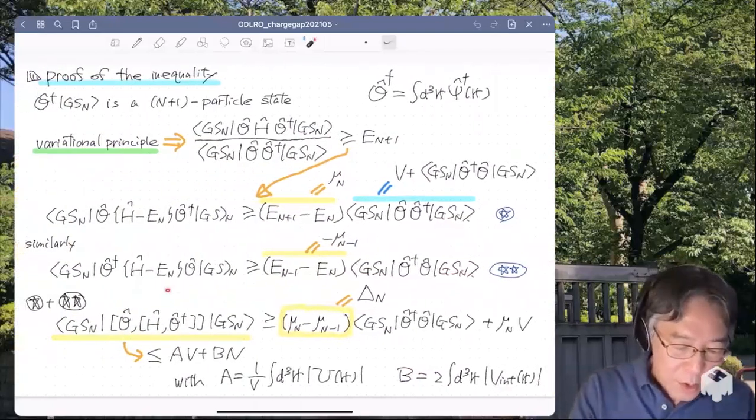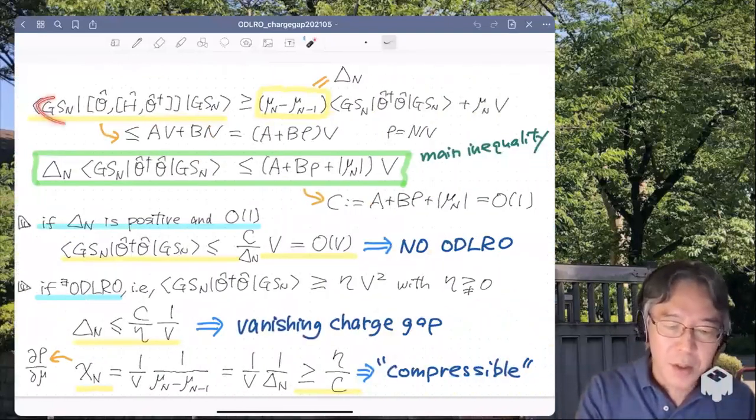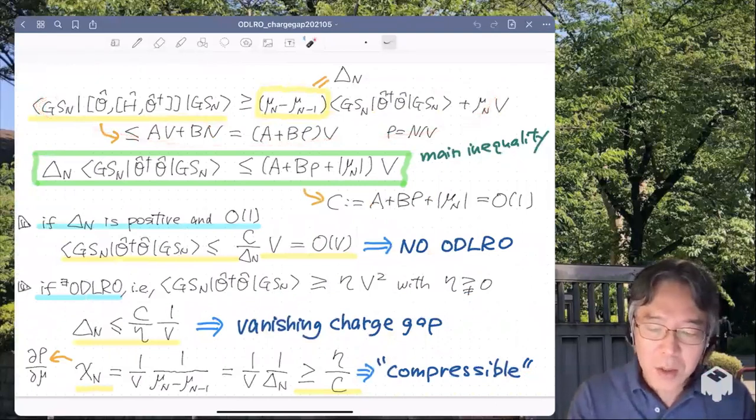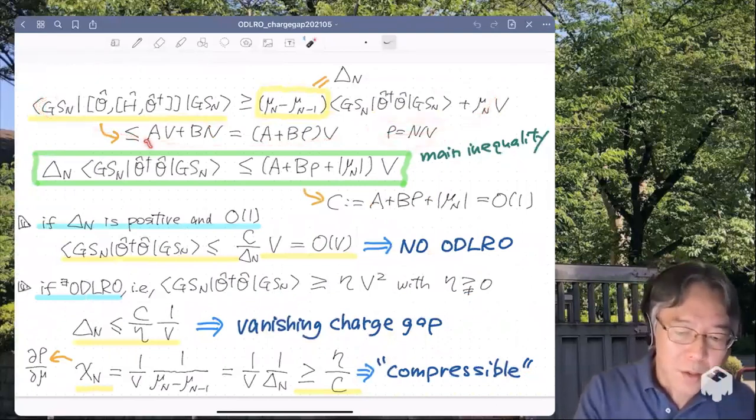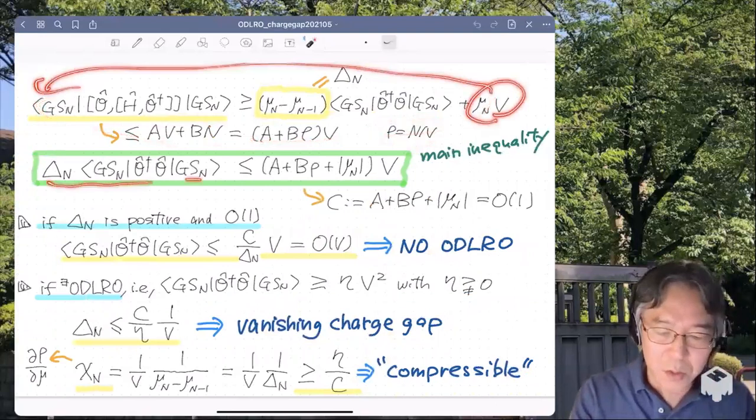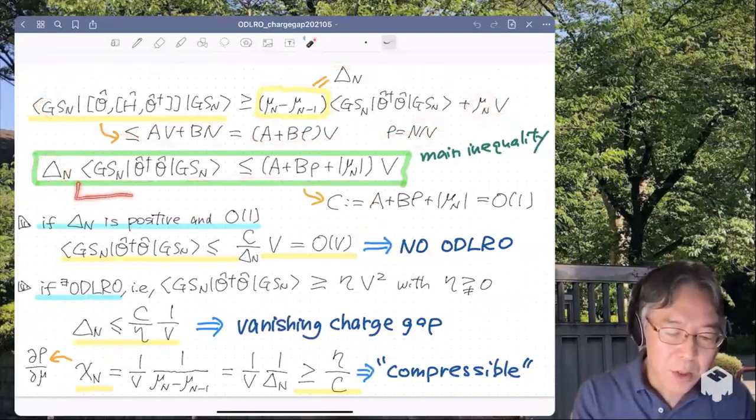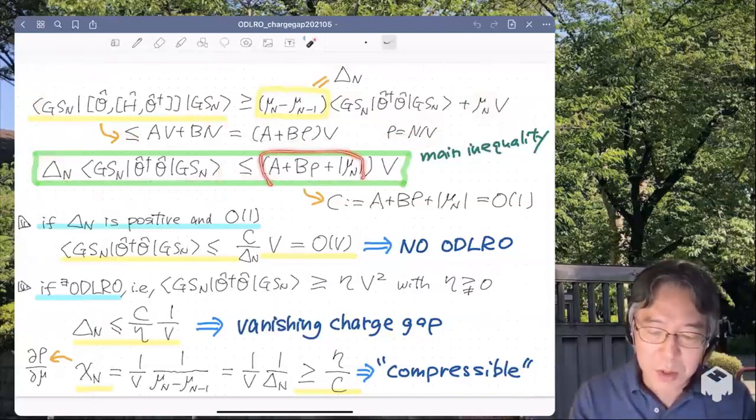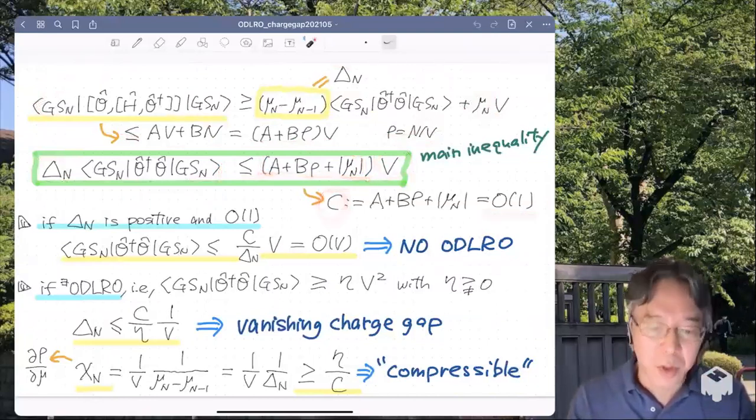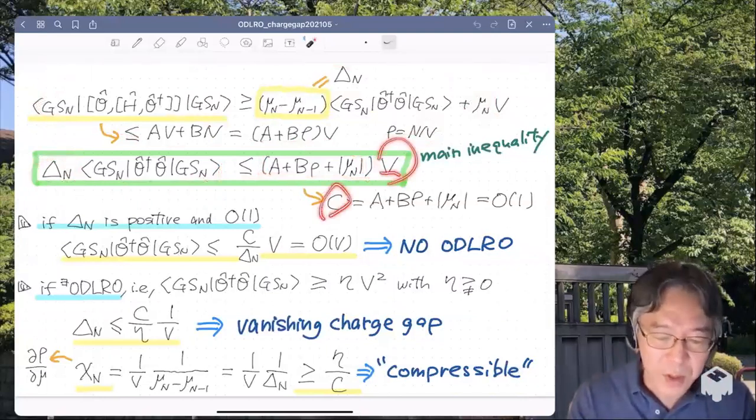Now, okay. So this is a very important inequality. So I copy this and paste it here. So this is the same thing. And now I write the particle density as rho. And then I can rewrite this in this way and bringing this guy here, I get this inequality, which is our main inequality. Delta_N, the charge gap times the ground state, ground state expectation value of O dagger O is upper bounded by something times V. This something, let me write it as C is a quantity of order one. So we have shown that the delta_N times this is upper bounded by C times V.